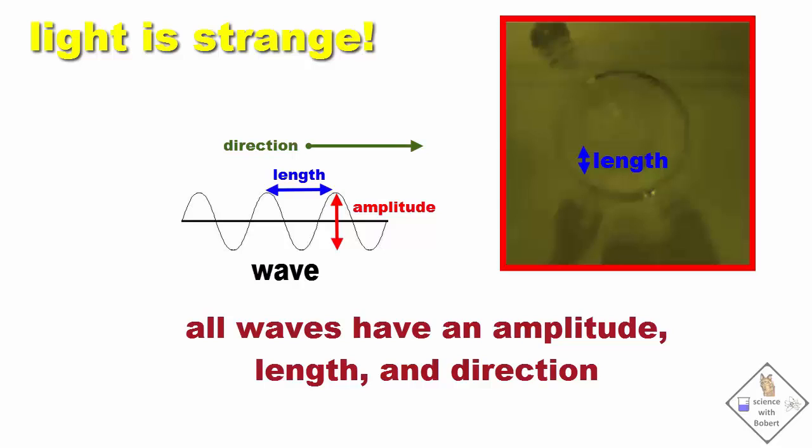The length of a wave is referred to as its wavelength. It is the wavelength of light that determines the name of the region of light.